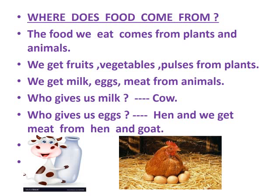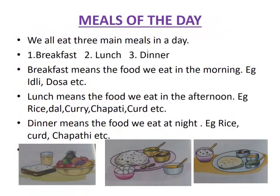Some food items we are getting from animals. What are those? We get milk, eggs, and meat from animals. Who gives us milk? Cow. Who gives us eggs? Hen. Hen lays eggs. We get meat from hen and goat also.